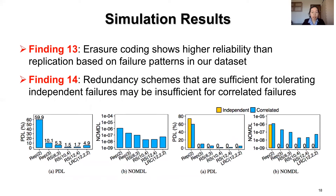We first evaluate the reliability of different redundancy schemes based on SSD failure patterns in our dataset. From the left figures, we observe that erasure coding shows higher reliability than replication. We next examine the reliability under only independent failures from a mathematical failure model and under the failure patterns in our dataset, including both independent and correlated ones. The right figures show that redundancy schemes sufficient for tolerating independent failures may be insufficient for correlated failures.